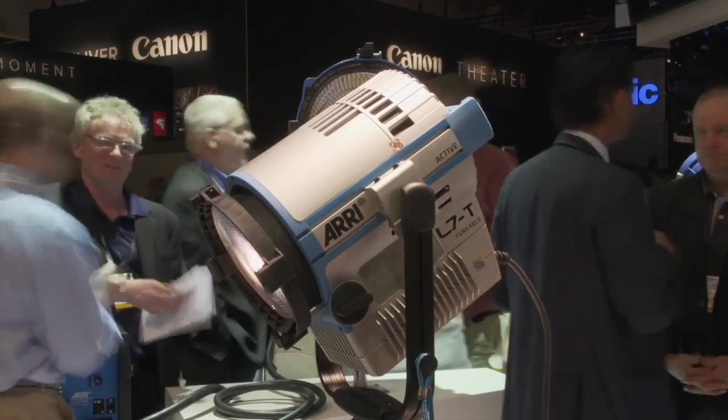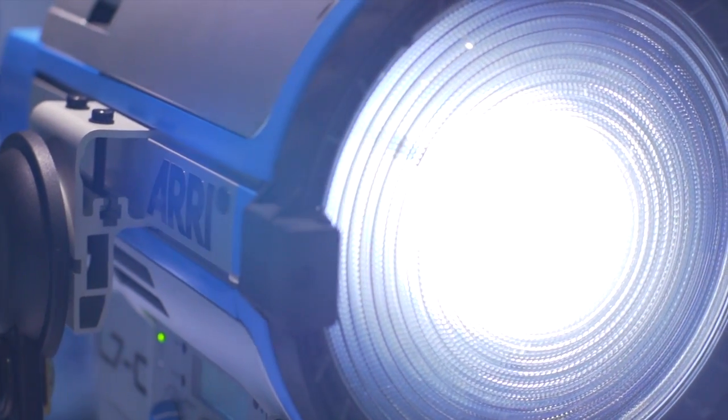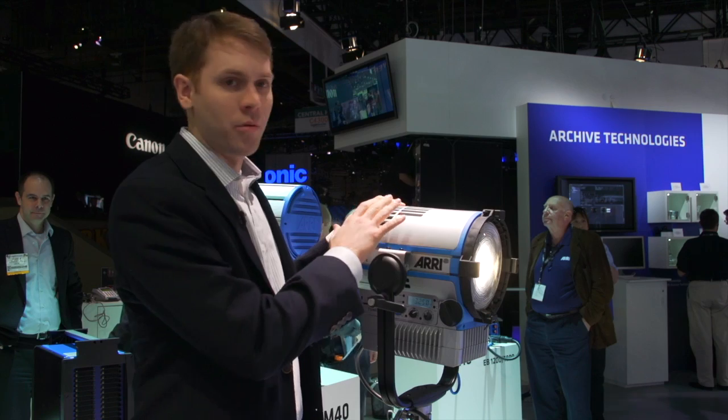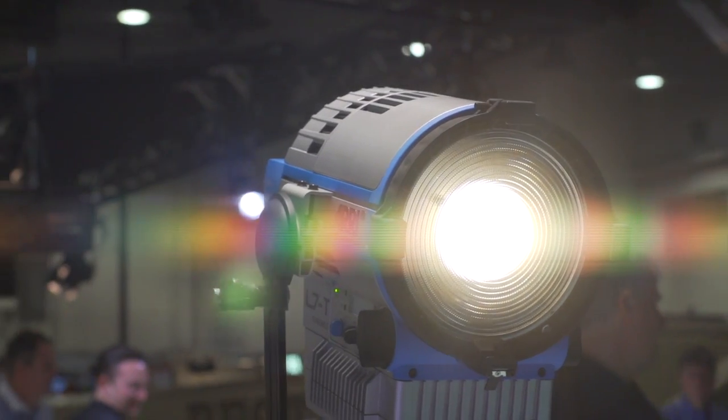So the L7 is our LED Fresnel light. We came out with the L7C, which is a color version of that light, about a year and a half ago. Today we're here to show you a brand new version of the L7, which is the L7TT, or tunable tungsten.